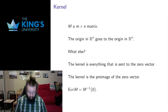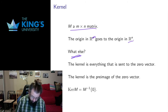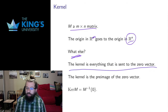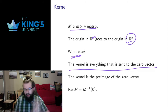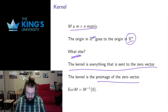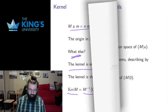Let's talk about the origin. For an m by n matrix, the origin in the domain Rn goes to the origin in Rm — linear transformations must preserve the origin. But I can ask what else gets sent to zero in the target, and that's called the kernel. The kernel is everything that gets sent to the zero vector. It always includes the zero vector, but it might include more — the transformation might collapse other things down to zero. The kernel is the pre-image of the zero vector, often written as ker(M).